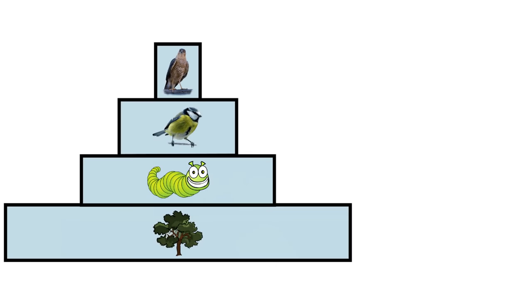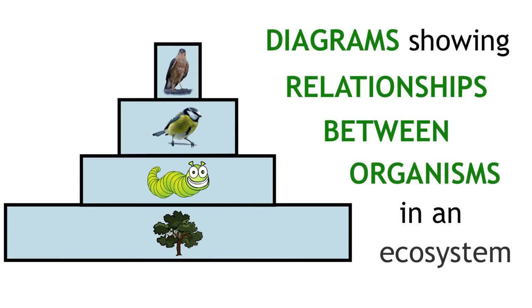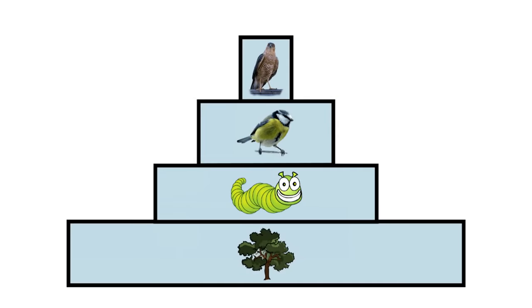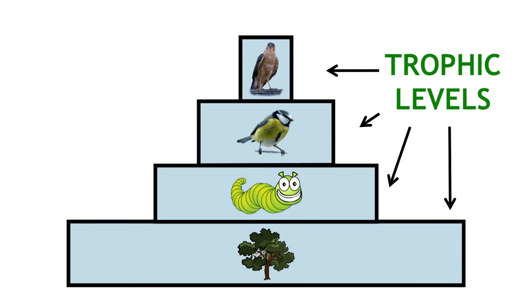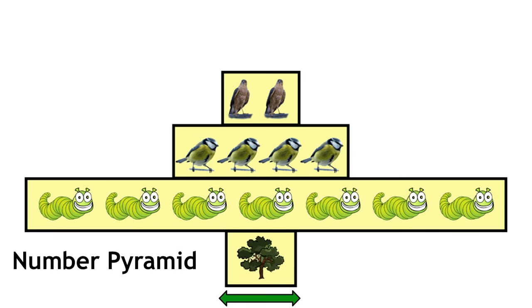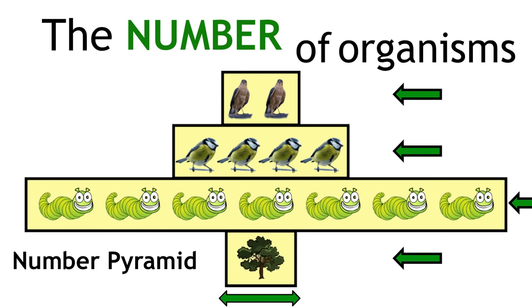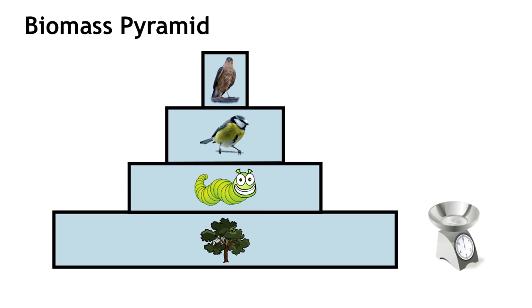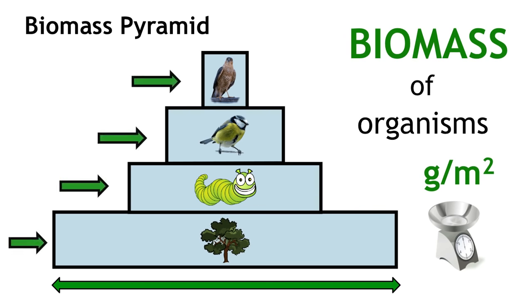So, to recap. Ecological pyramids are diagrams that we use to visually represent the relationship between organisms in an ecosystem. The bars each represent trophic levels, and their order represents the flow of energy. The width of the bar in the number pyramids represents the number of organisms in that trophic level. The width of the bar in biomass pyramids represents the biomass of the organisms in that trophic level.